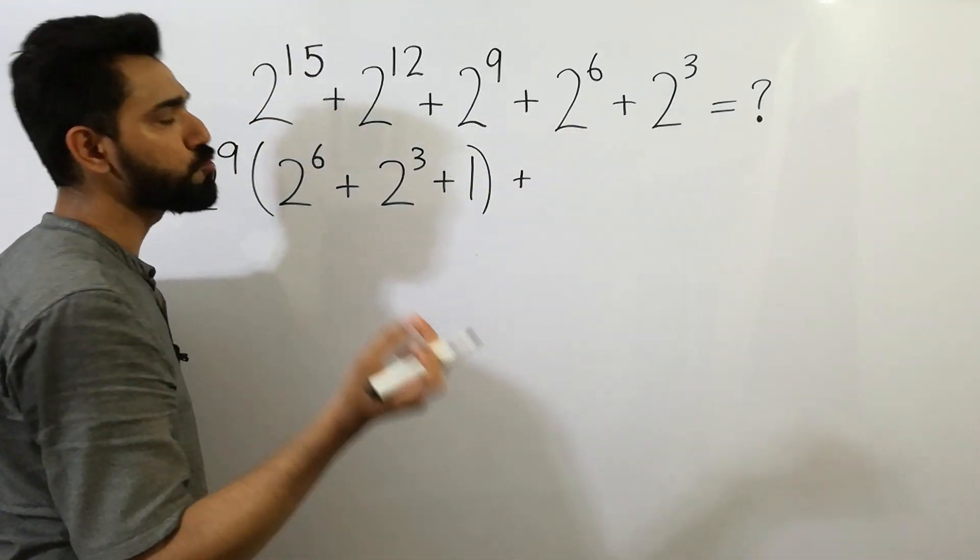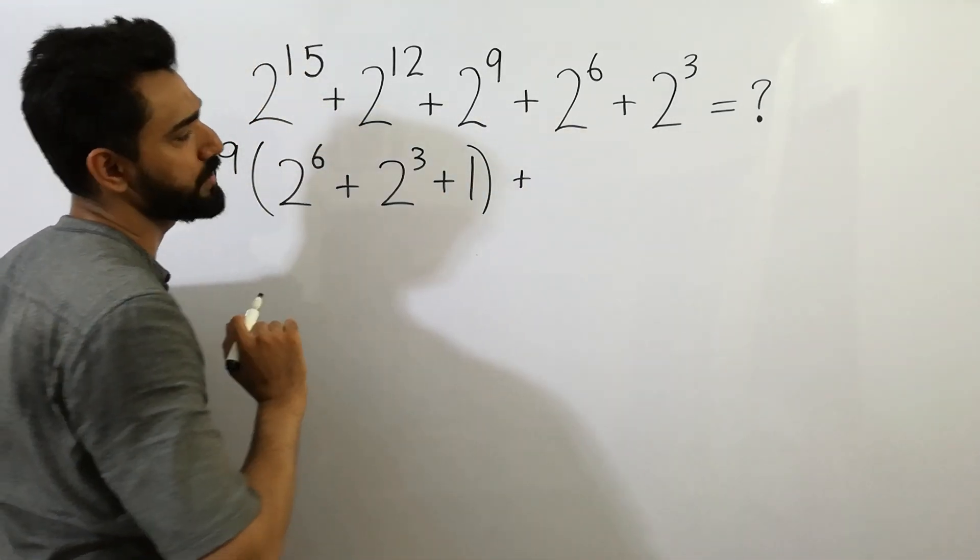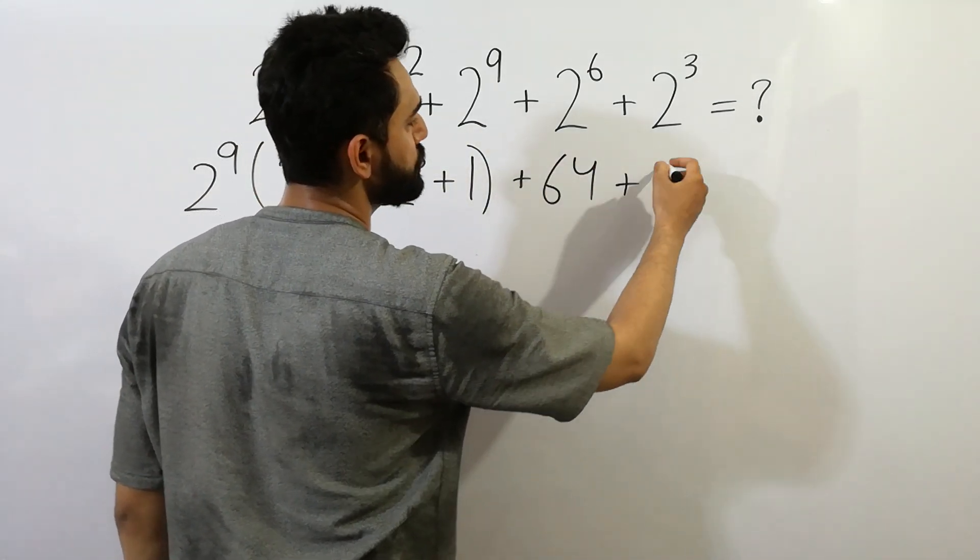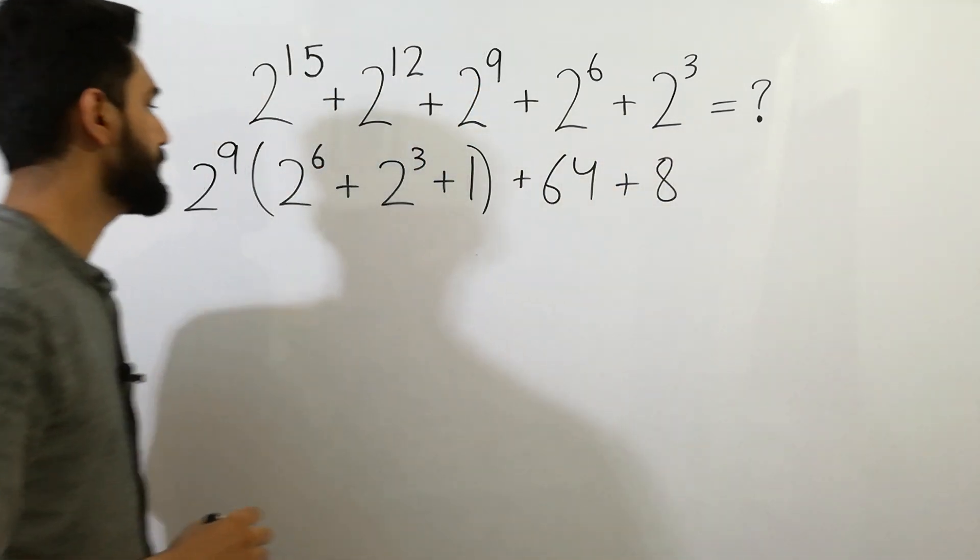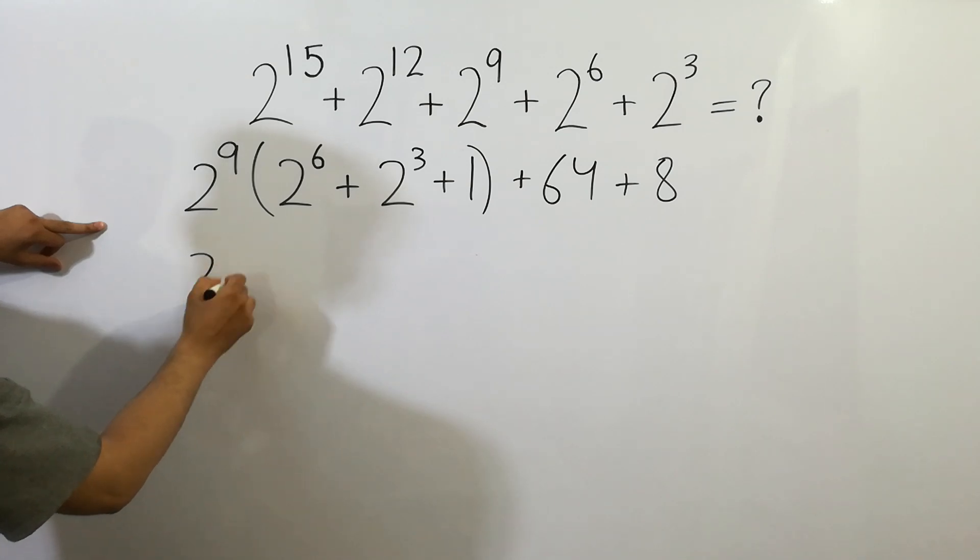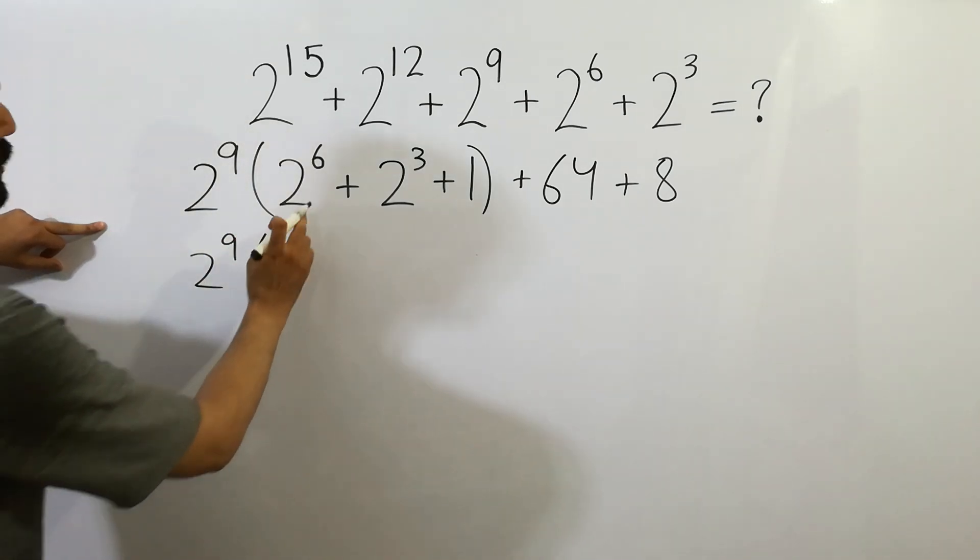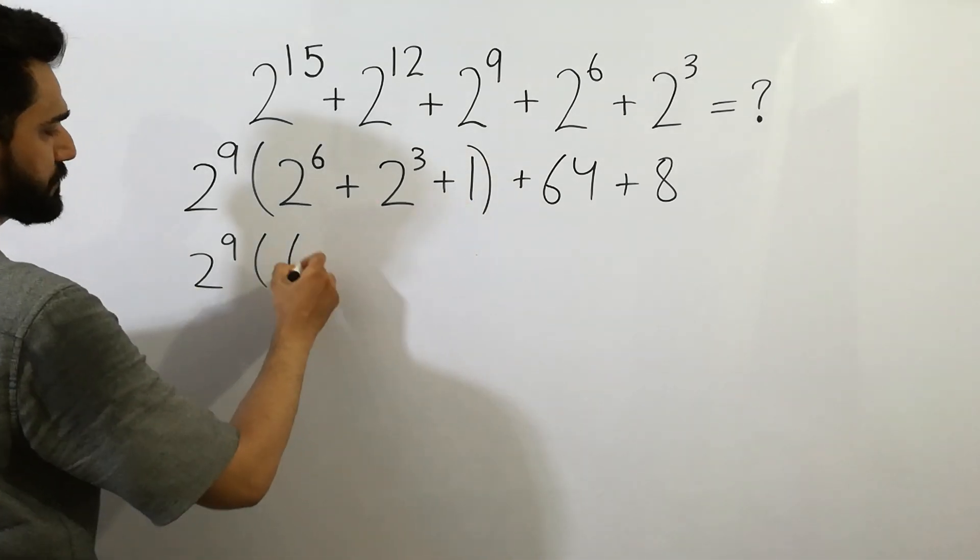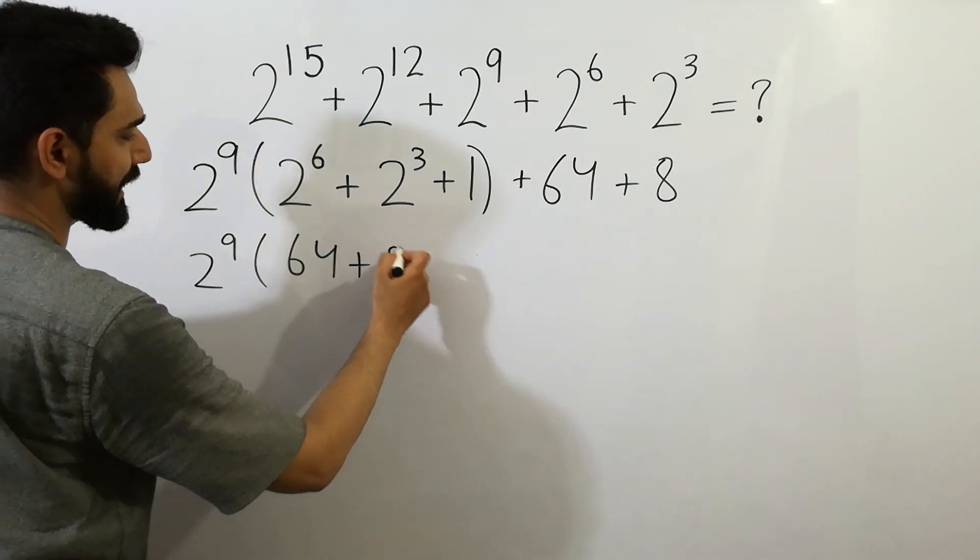As we know that 2 to the power 6 is equal to 64, and 2 cubed is equal to 8, we can write 2 to the power 9 bracket: 2 to the power 6 is 64, plus 2 cubed is 8...